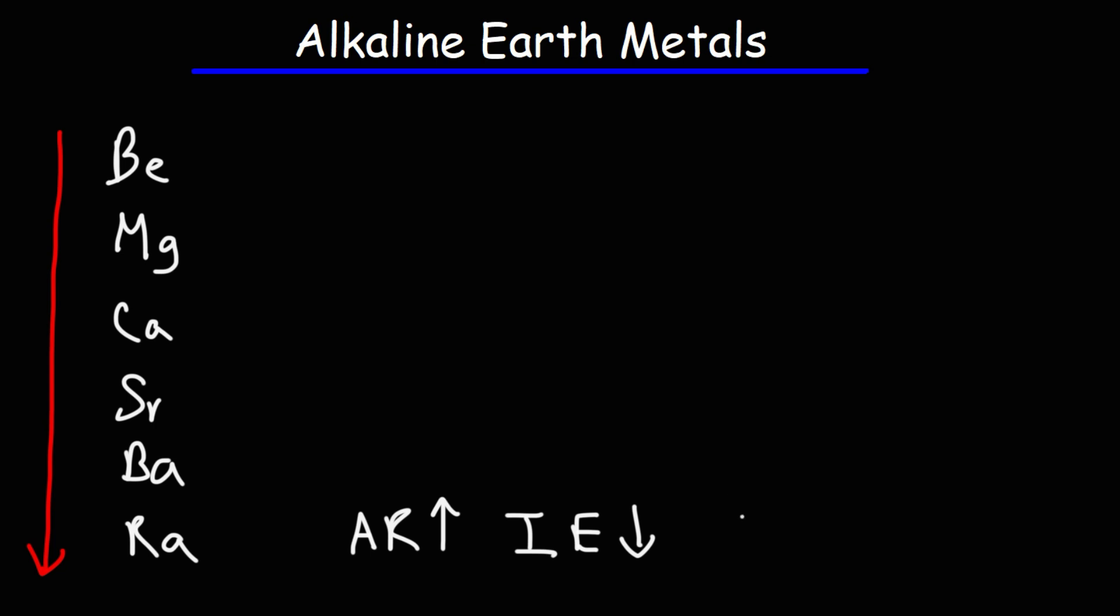Now as you go down the group, the melting point of the alkaline earth metals generally decreases, however magnesium is an exception. So the melting point for beryllium is 1287 degrees Celsius, for calcium it's 842, for strontium it's between 770 and 780, and for barium it's 727 degrees Celsius.